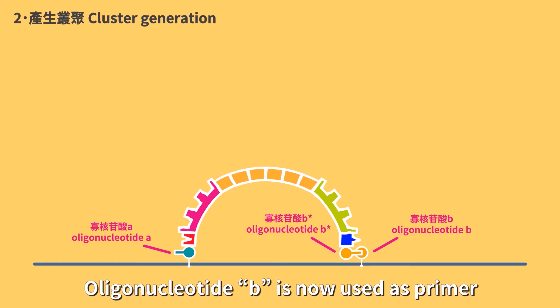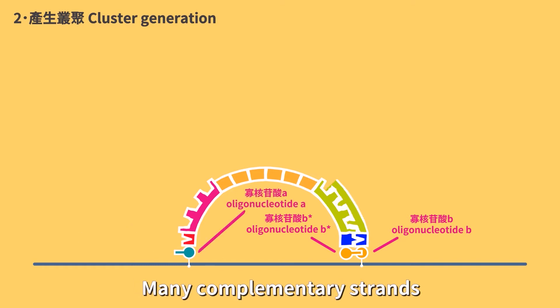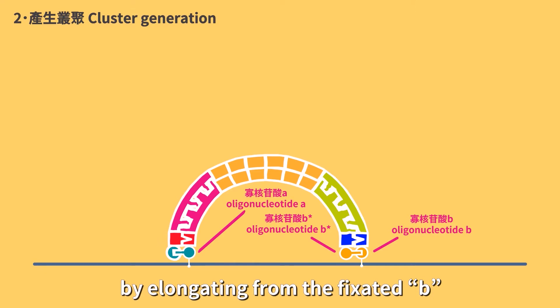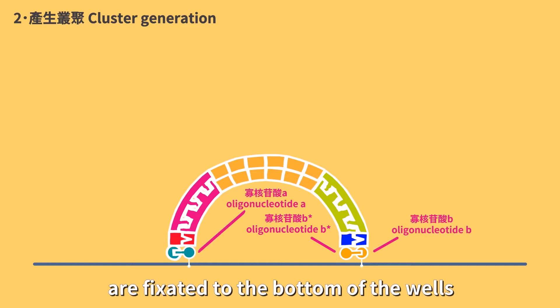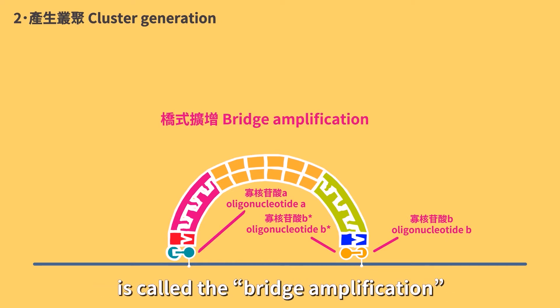Oligonucleotide B is now used as primer, while the complementary strand is used as the second template. Many complementary strands are simultaneously generated by elongating from the fixated B. Now that the primers of both strands are fixated to the bottom, the entire molecule will be bent into a bridge-like shape. This amplification technique is called bridge amplification.